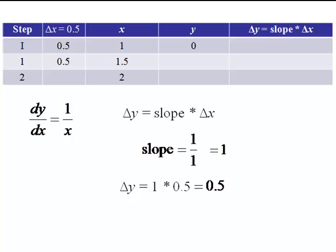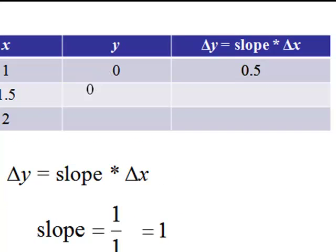So our delta y, or our change in y, is 1 times 0.5, or times our delta x, which is 0.5. Now, that change in y tells us how much we're moving in the y direction, which corresponds to our move in the x direction. So to calculate our new y value, we take our old y value plus our change in y to get our new y value of 0.5.